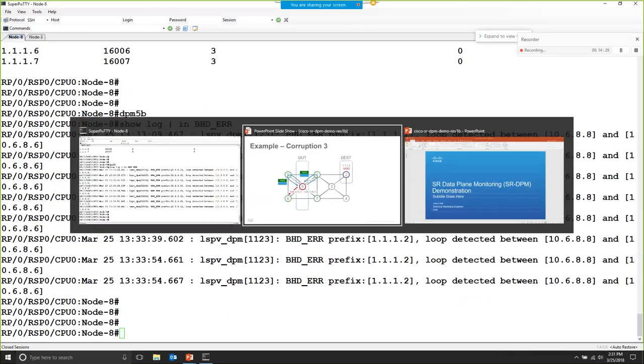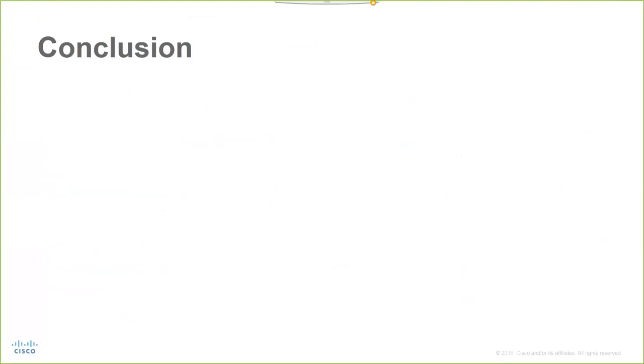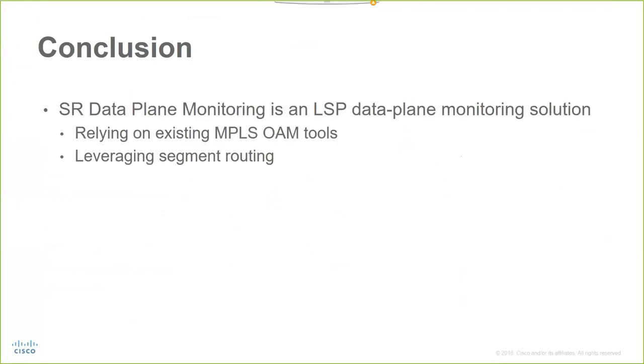So back to the slides. And to summarize. Segment routing DPM provides an effective solution for LSP data plane monitoring and black hole detection. It is local. It runs per node function that relies on existing MPLS OAM operations using segment routing to enforce the path of its test traffic.